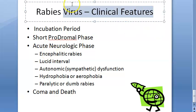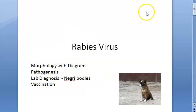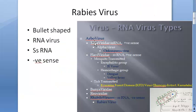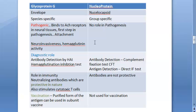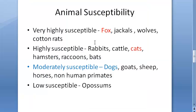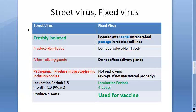In this video we will look at the clinical features of rabies virus. Previously we saw the introduction: rabies is a bullet-shaped RNA virus with single-stranded negative-sense RNA. It has two important antigens: glycoprotein G and nucleoprotein. Glycoprotein G is very pathogenic and used in diagnosis and vaccination. Street virus is freshly isolated and pathogenic; fixed virus from serial passage is not pathogenic and used to prepare vaccines with a four to six day incubation period.